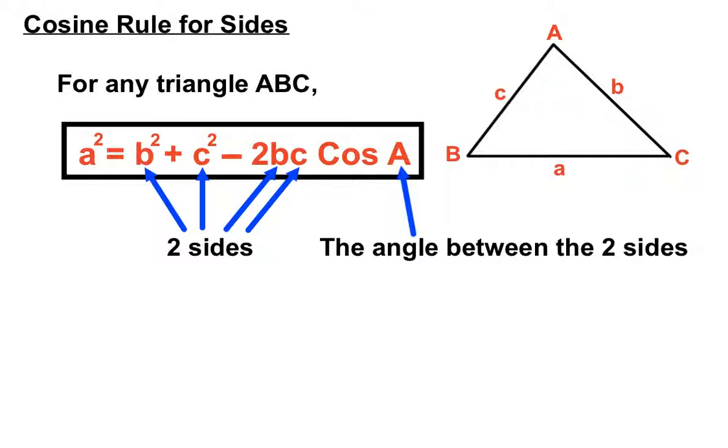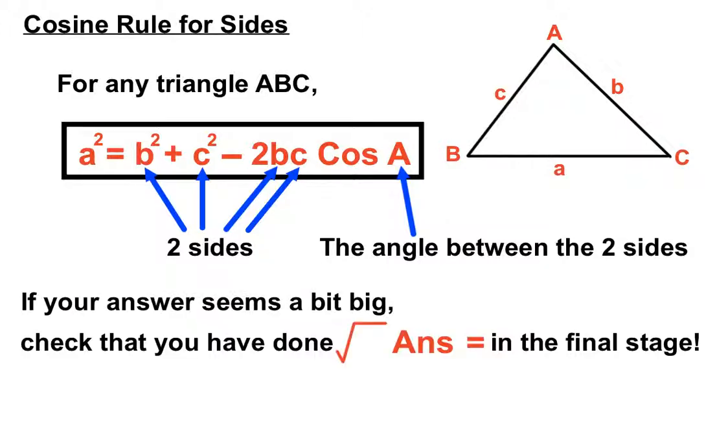That angle has to be what we call the included angle, the angle that's between the two sides that we're using. And if your answer seems too big, just to recap, then you've probably forgotten to square root your answer.